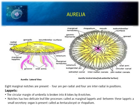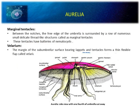The structure of Aurelia includes oral arms, marginal lappets, velarium, marginal tentacles, ex-umbrellar surface (upper surface), four unique gonads, and radial canals visible in lateral view. In the ventral view showing the sub-umbrellar surface, lappets are present. The circular margin of the umbrella is broken into eight lobes by eight notches. Each notch has two delicate leaf-like processes — marginal lappets. Between these lappets, small sensory organs are present — the tentaculocysts or rhopalium.